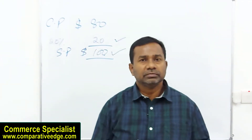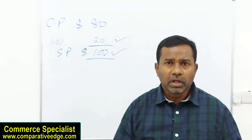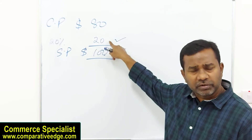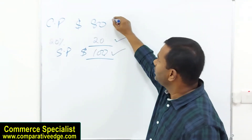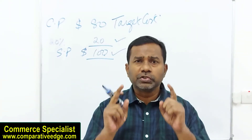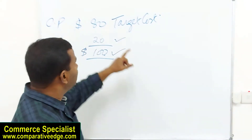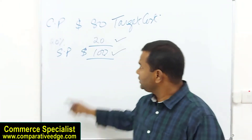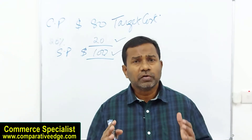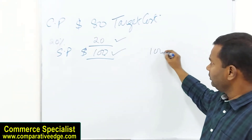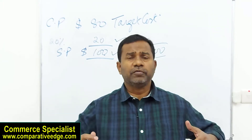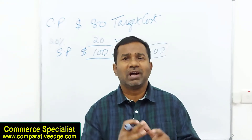The product sells in the market for $100. If you take out the owner's expected return of $20, what you're left with is the target cost — meaning you must direct all your efforts to ensure your cost of manufacturing one unit is $80. On the market price, you have no control; it is determined by demand and supply forces, especially in a competitive environment with perfect competition.